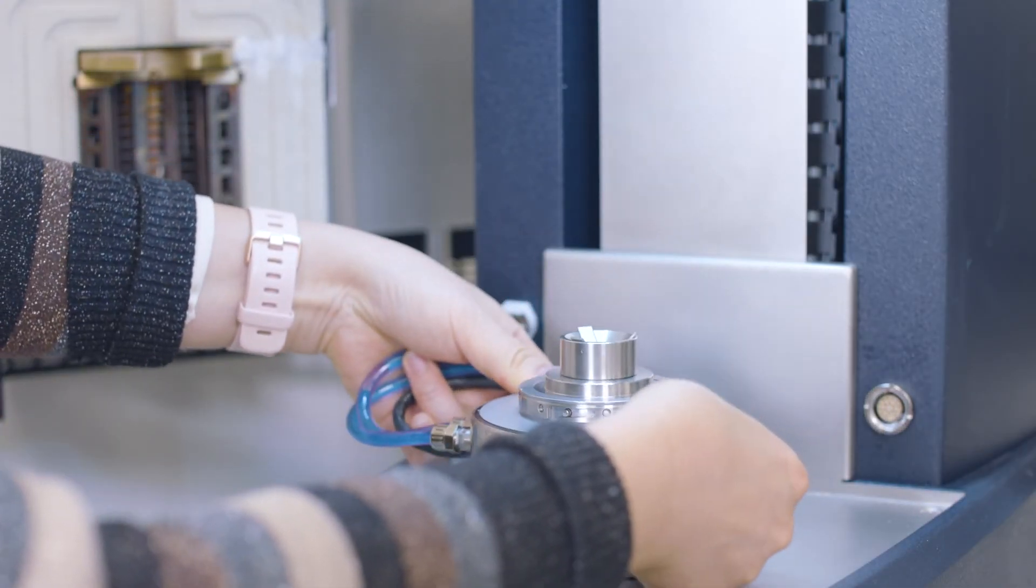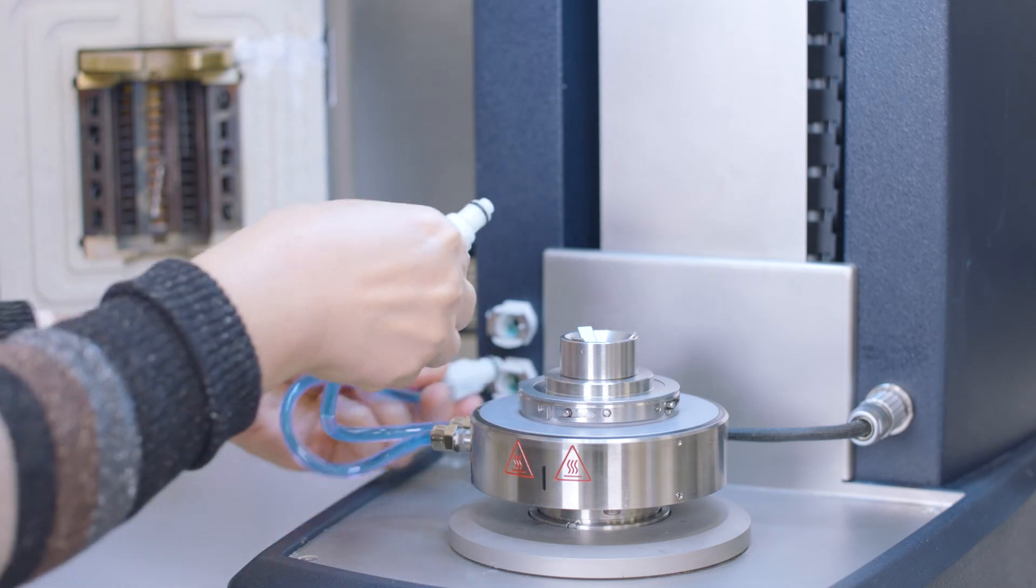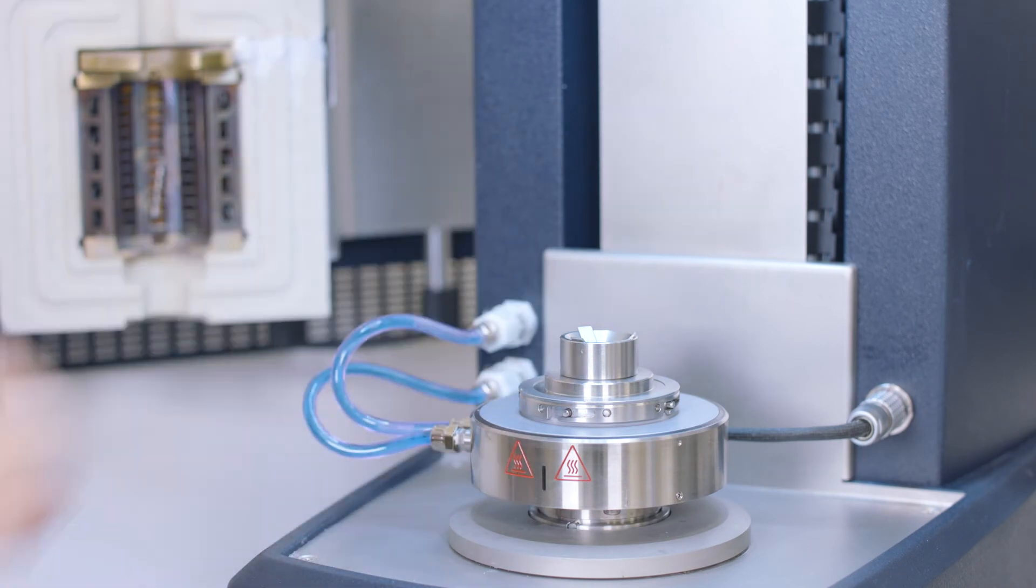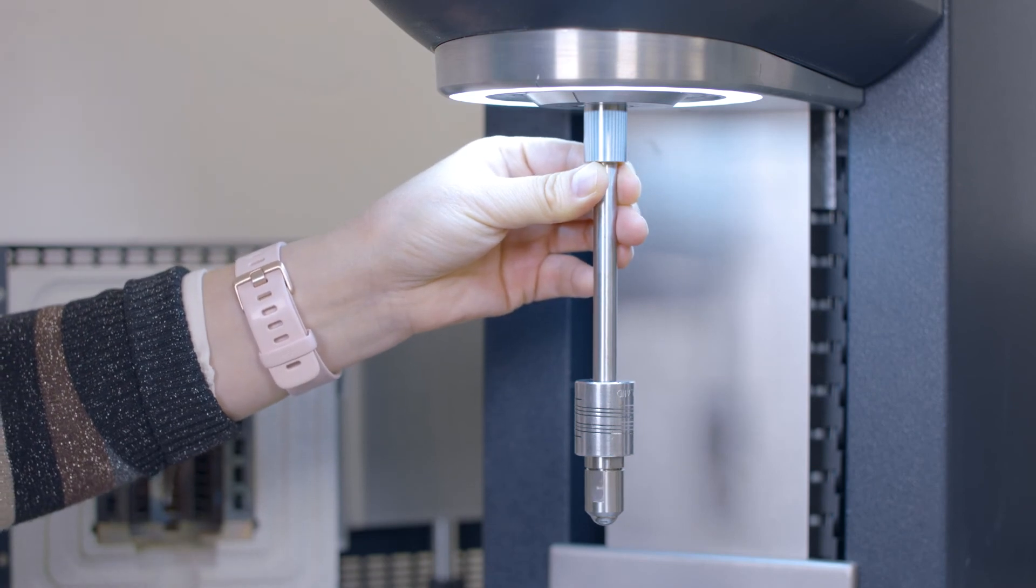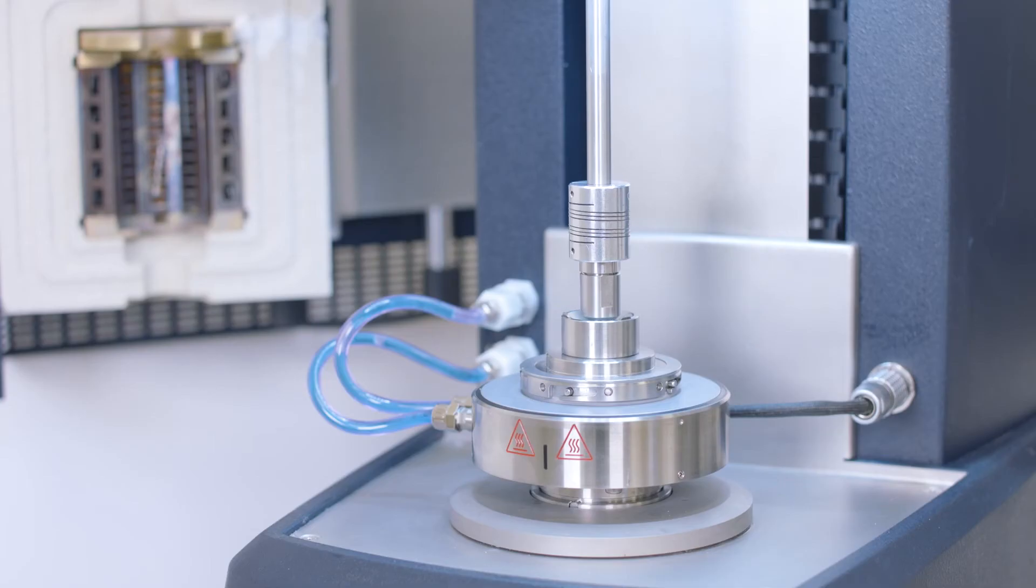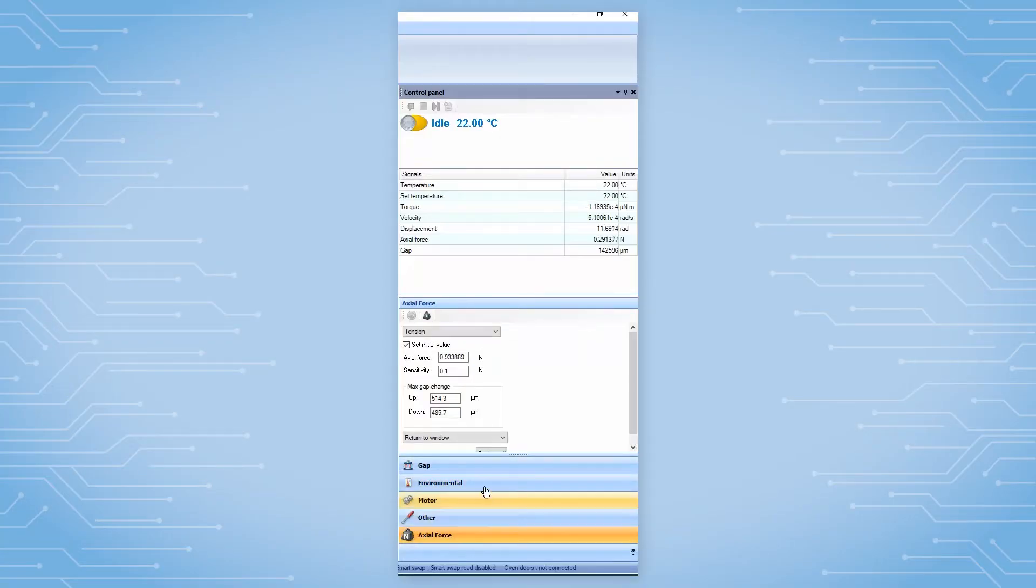Setting up a tribo-rheometry test on a Discovery hybrid rheometer is very straightforward. First of all, after attaching the upper and lower geometry to the rheometer, users need to zero the gap. If needed, from the TRIO software control panel, also zero the axial force.